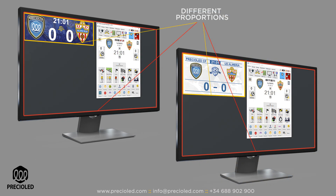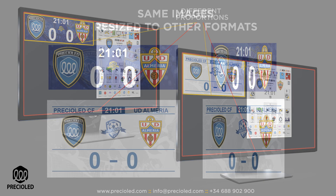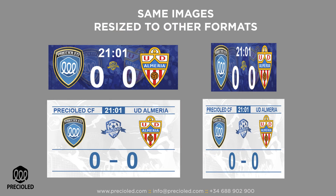Normally the Windows desktop format is 16:9, and video scoreboards, especially the smaller ones, have other formats. Showing an image in a different format than its own causes a distortion of it.